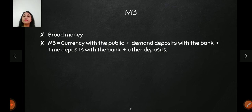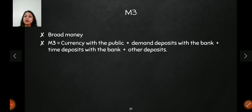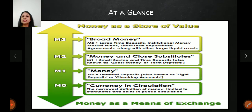So RBI has four measures of money supply: M0, M1, M2, and M3. The key difference among all four is that as you move higher, less liquid assets are also included in the definition of money supply. RBI uses these measures to see how much stock of money is in the economy and which assets to include.